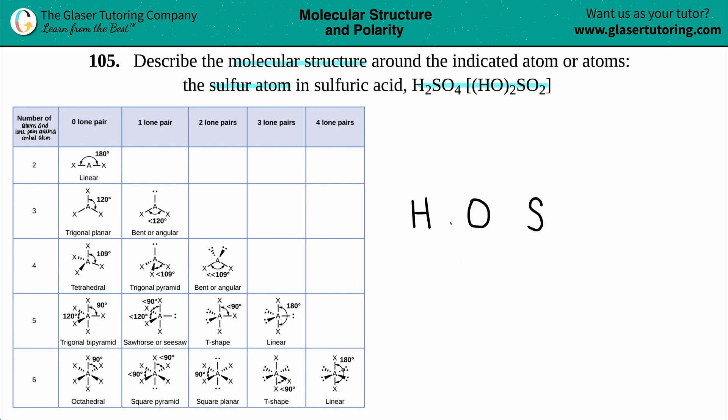Now it doesn't really matter whether you draw the HO on the left side or the right side or up or down, but you just got to put two of them. So here's one oxygen, hydrogen, and here's the other one, oxygen and hydrogen. Now that sulfur also has two oxygens bound to it. So I got room, I got one up and one down.